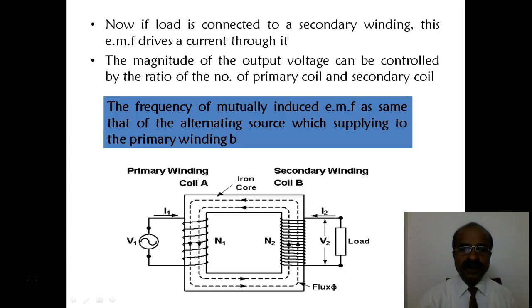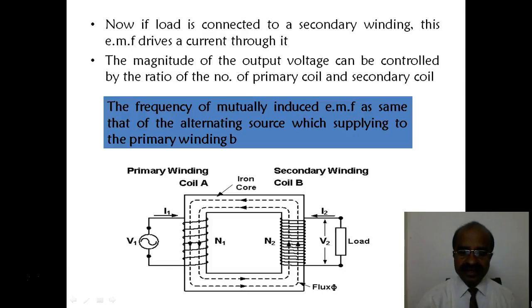The frequency of the mutually induced EMF is the same as that of the primary winding. The figure indicates the primary winding and secondary winding, with the iron core. The primary winding is connected to the source of voltage, and the secondary winding is connected to the load.